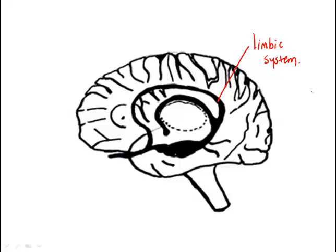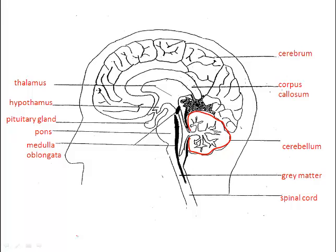The limbic system is also involved in memory. Finally, we'll talk about the cerebellum. The cerebellum is not a part of the internal cerebrum, but we'll discuss it here. The cerebellum coordinates complex movement.